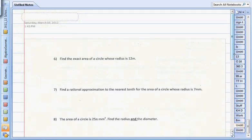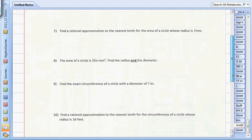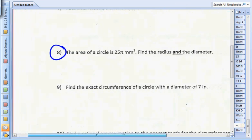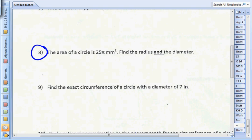Let's take a look at the second page, number 8. This is another working backwards problem. Here we're looking at a circle. The area of the circle is 25π millimeters squared. Find the radius and the diameter.